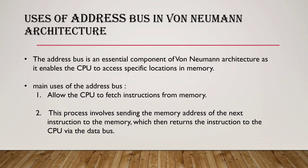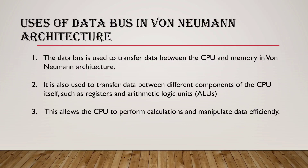The Address Bus enables the CPU to access specific locations in memory. It has two main uses: first, to allow the CPU to fetch instructions from memory by sending the memory address of the next instruction; second, the memory then returns the instruction to the CPU via the Data Bus. The Data Bus transfers data between the CPU and memory, between components of the CPU such as registers and the ALU, and allows the CPU to perform calculations and manipulate data efficiently.